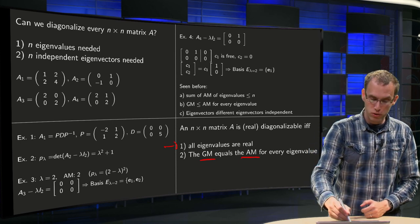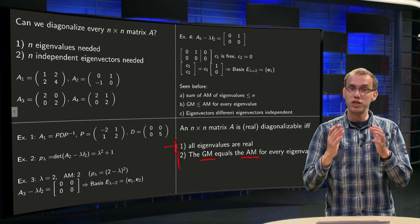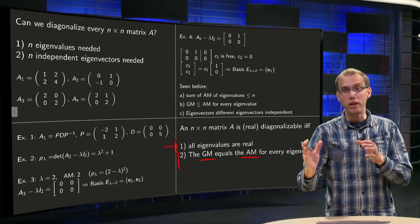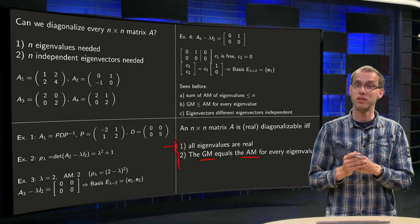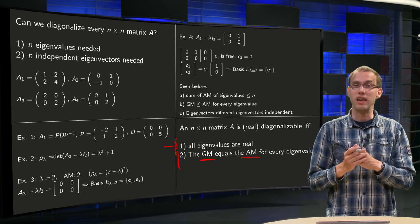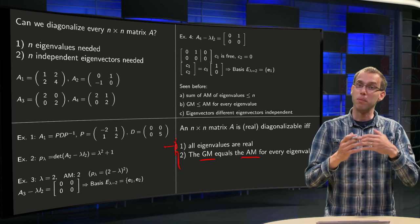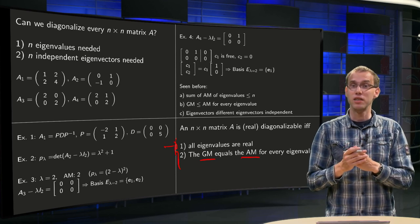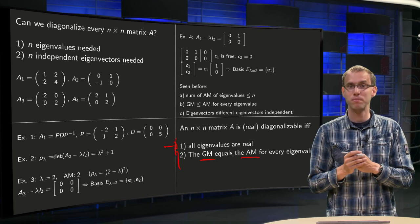So we have two criteria here which tell you whether your matrix is diagonalizable or not. Let's see in the next video how we can apply that in a specific and explicit example.